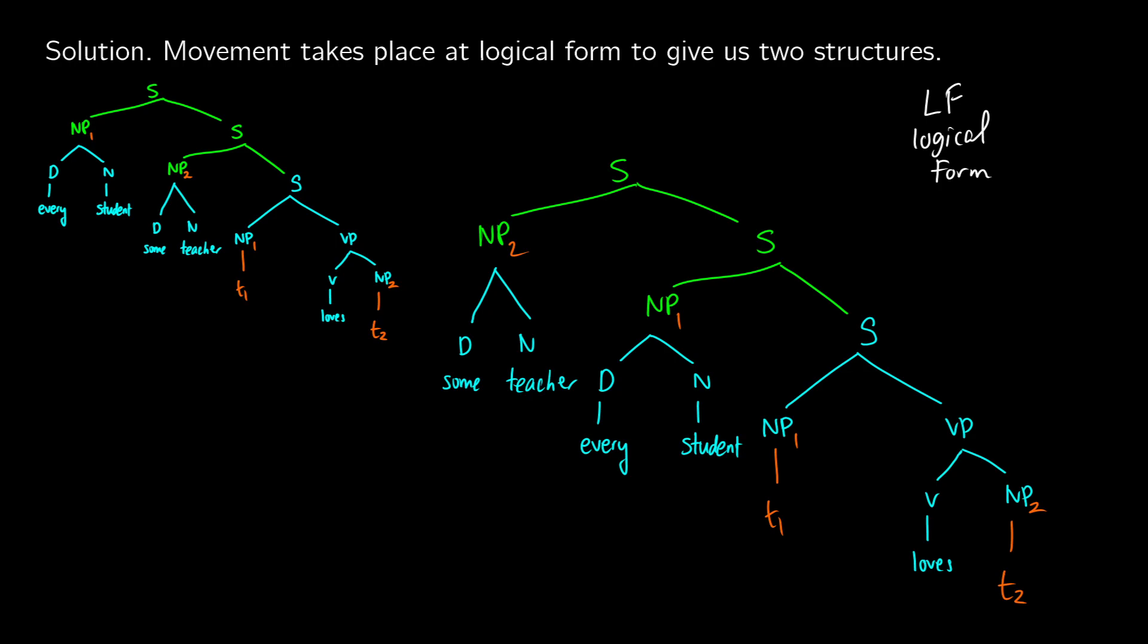Now we have for some particular teacher, and for every student, t1 loves t2. So this would be the particular teacher interpretation, and then every other student or every student out there likes that particular teacher. So this is quantifier raising in logical form to get our two different interpretations for scope ambiguity.